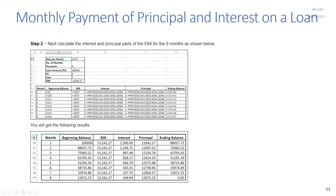Next, calculate the interest and principal parts of the EMI for each of the 8 months. The beginning balance for month 1 is the loan amount. The IPMT function takes the rate per month, the month number, the number of payments, the loan amount, and type. The PPMT function uses the same parameters. The ending balance each month equals the beginning balance minus the principal payment. Copy the formulas down for all 8 months.